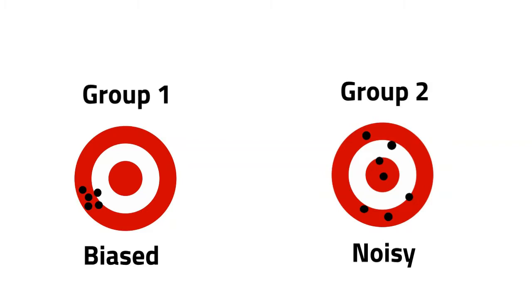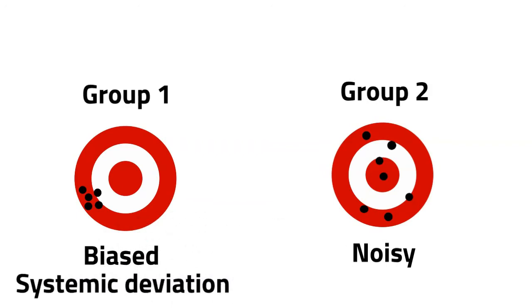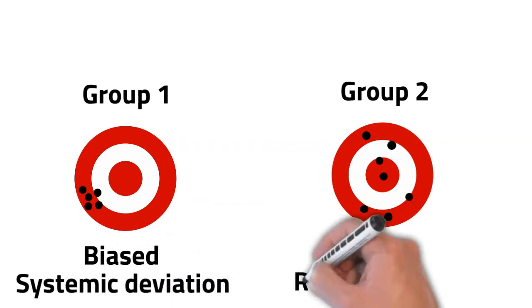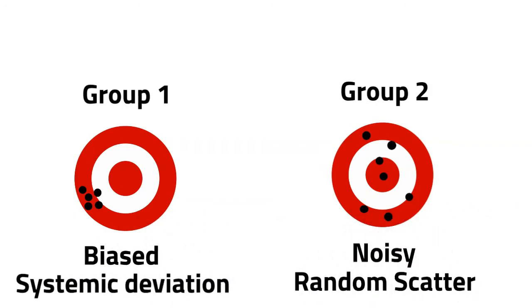Errors can usually be summed up in one of these two ways, or a combination of them: systemic deviation, or bias, and random scatter, or noise.